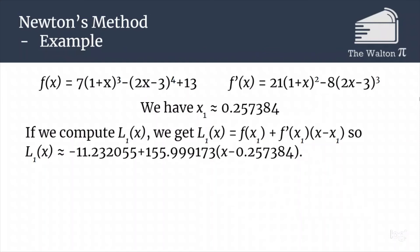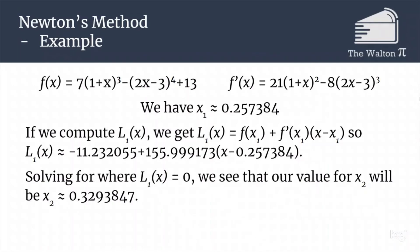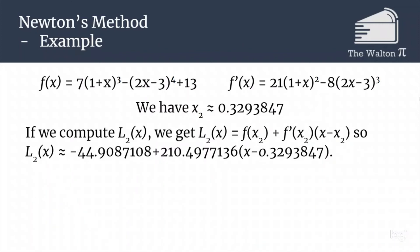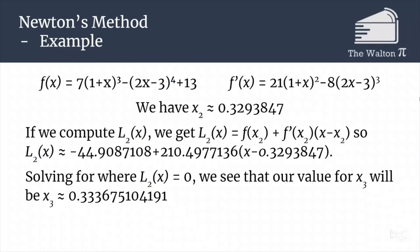Most computers use better approximations; this is just a very simple one that is easy to get an idea of how these approximations work. Once we have our line, we need to solve for where that's equal to 0, so x₂ is going to be 0.329384, and then we repeat this process to get L₂(x), our second linear approximation, solve for where that's equal to 0, and we get x₃ = 0.333675104191, and so on. The decimal continues.